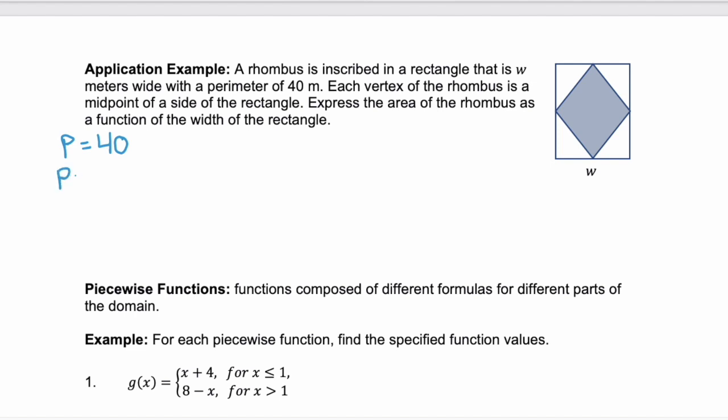We know that the perimeter of our rectangle is 40 meters. And we know that perimeter is equal to 2w plus 2l. Do we know how big this side l is? No, but we can find it since we know the perimeter. So we know 40 equals 2w plus 2l. We can divide everything by 2 to get 20 equals w plus l. And solving that for l, we get l equals 20 minus w.